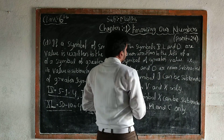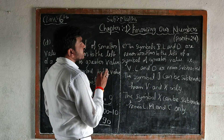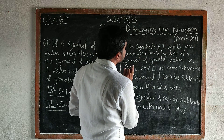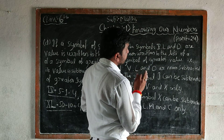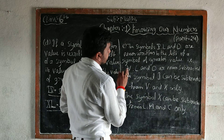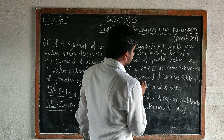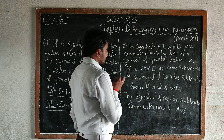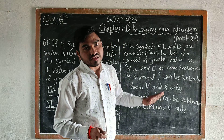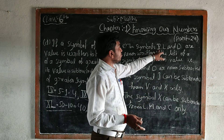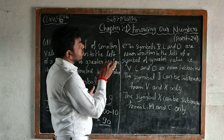The symbols V, L, and D are never written to the left of a symbol of greater value — meaning V, L, and D are never subtracted. The symbol I can be subtracted from V and X only. The symbol X can be subtracted from L, M, and C only.